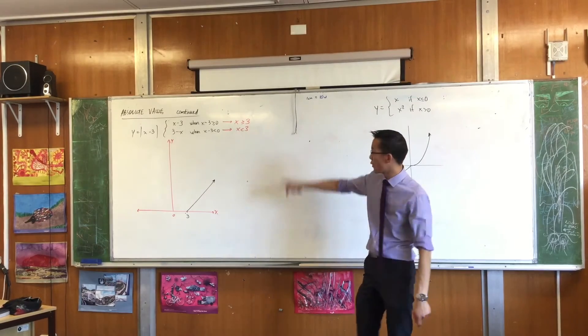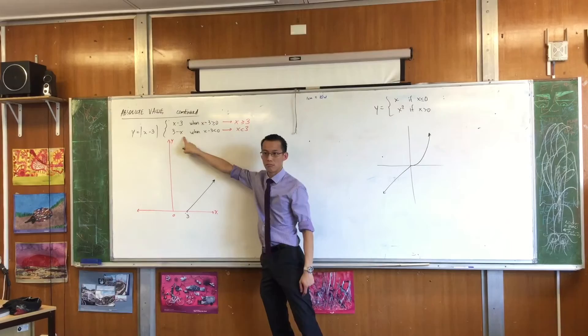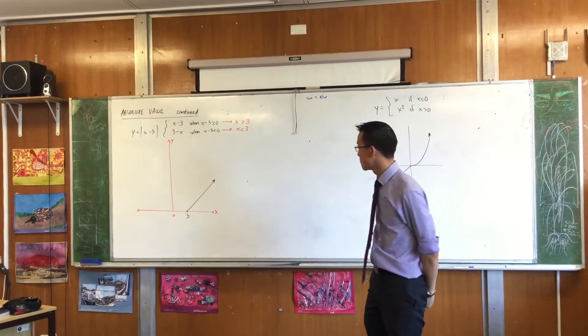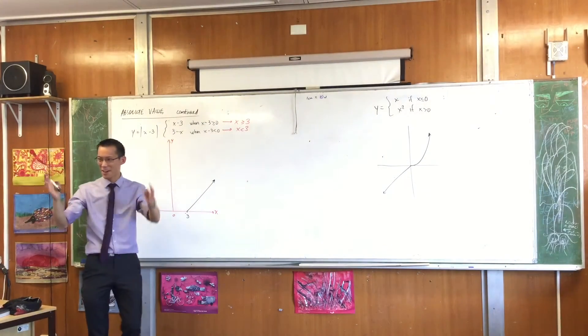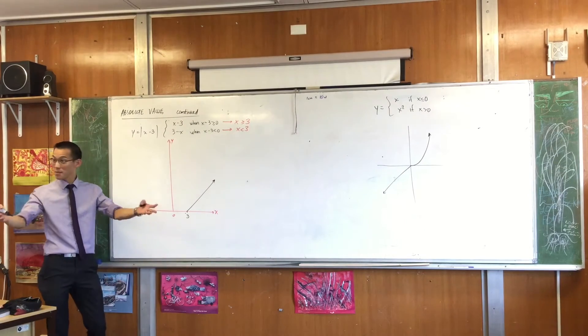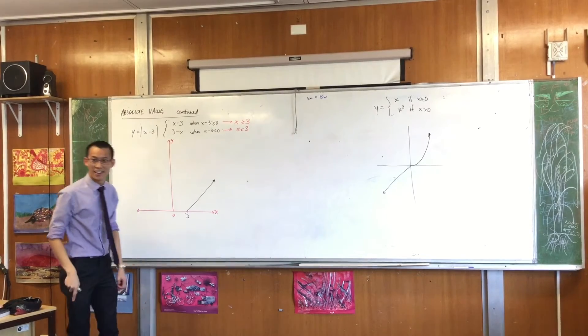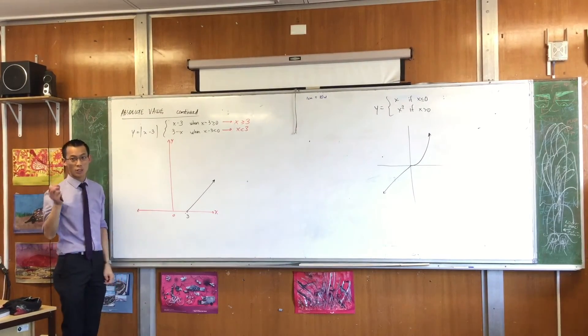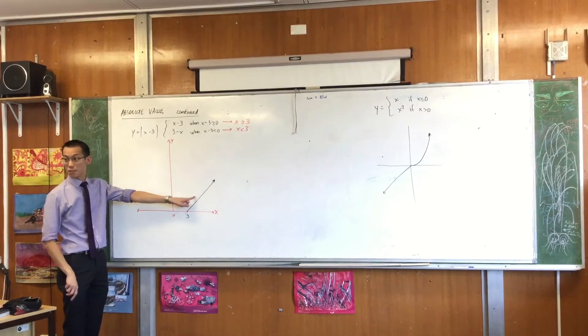Now for the rest of the domain, when x is less than 3, I don't draw that graph, I draw this one. What's that look like? How would you describe it? Can anyone give me some words? Because words are harder than you think. Michael, what do you reckon? It's going to be sloping down, isn't it?